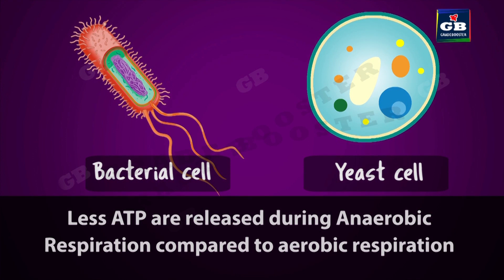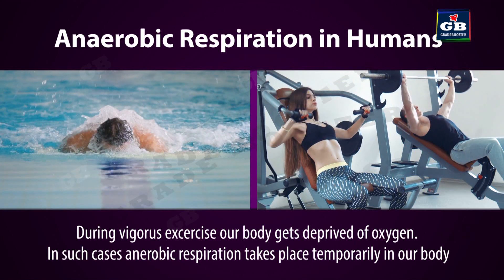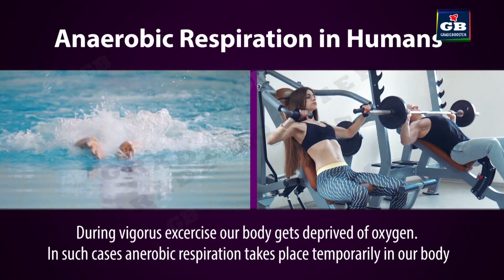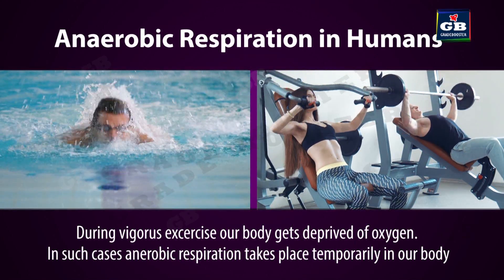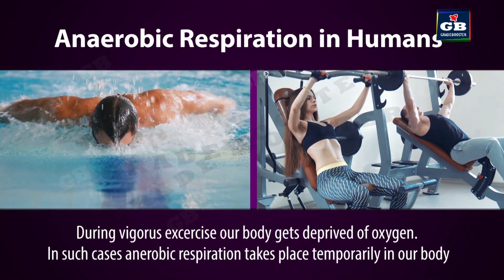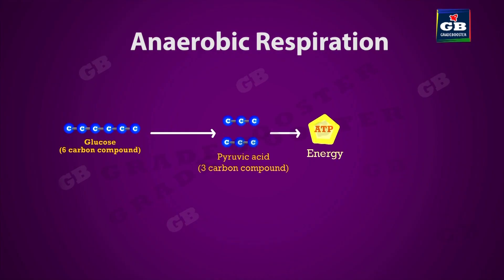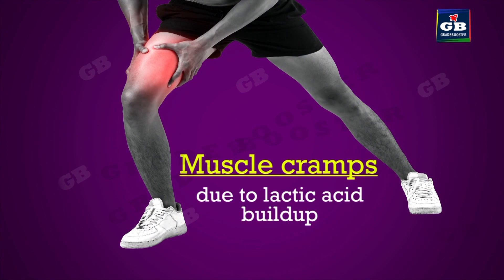Anaerobic respiration is observed in organisms like bacteria and in yeast. Sometimes, even in our bodies, anaerobic respiration takes place. While doing vigorous exercise, the oxygen levels decrease in our muscle cells. This leads to oxygen deprivation and leads to anaerobic respiration. In anaerobic respiration, pyruvic acid molecules turn into lactic acid by releasing energy. The buildup of this lactic acid in the muscle tissue due to anaerobic respiration leads to muscle soreness or muscle pain.